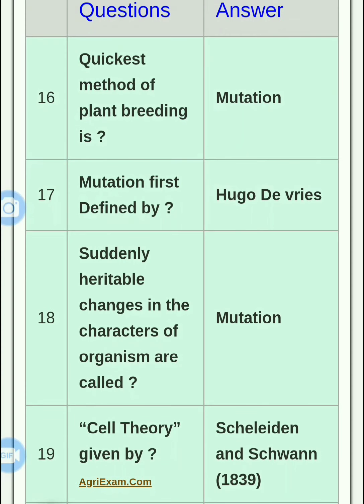The quickest method of plant breeding is selection, because in selection we only need to look at and select the characteristics of the plant — we do not need to do much else. Mutation is actually the longest duration method. Next question: mutation was first defined by Hugo de Vries.